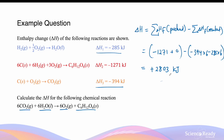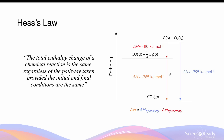The enthalpy change of a chemical reaction can also be determined by Hess's law. Hess's law states that the total enthalpy change of a chemical reaction is the same regardless of the pathway taken, provided the initial and final conditions are the same. Using the simple example of combining carbon solid and oxygen gas to form carbon dioxide, this process can be achieved in two separate pathways.